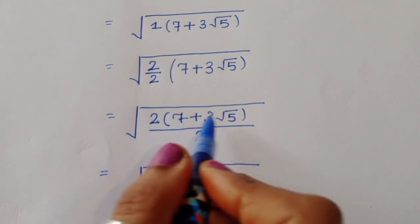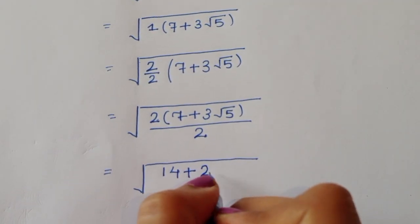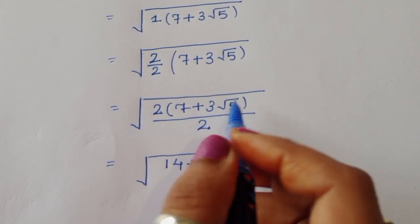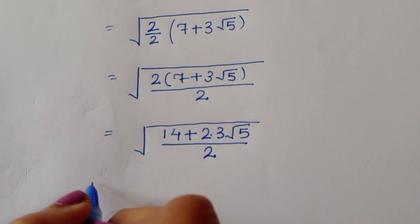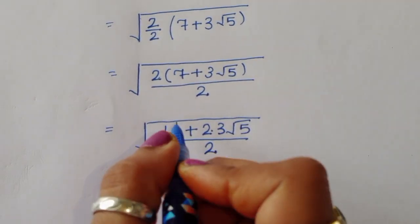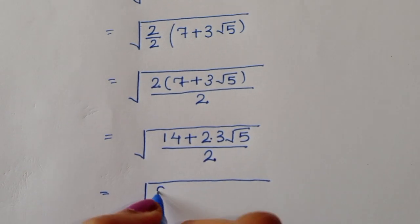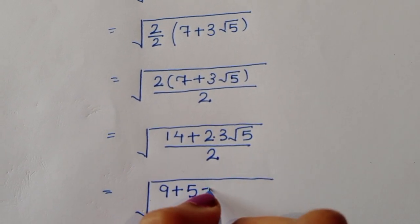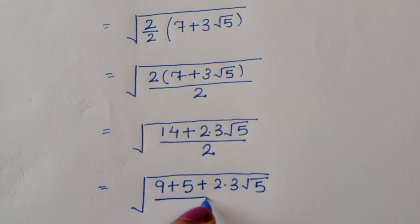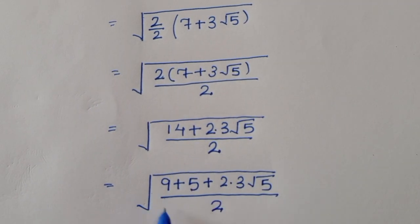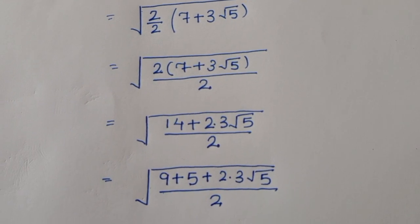Multiplying through: 2 times 7 is 14, and 2 times 3 is 6, giving us 14 plus 6 times square root of 5, all divided by 2. We rewrite 14 as 9 plus 5, so we have 9 plus 5 plus 2 times 3 times square root of 5, divided by 2. We are converting this to the form (a plus b) squared.